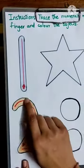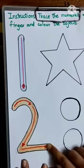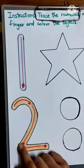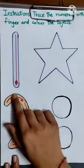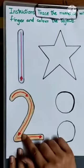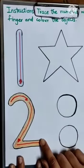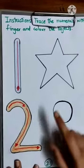Then to write 2, make a curve and a sleeping line. A curvy line, a sleeping line. And that's how you make 2.